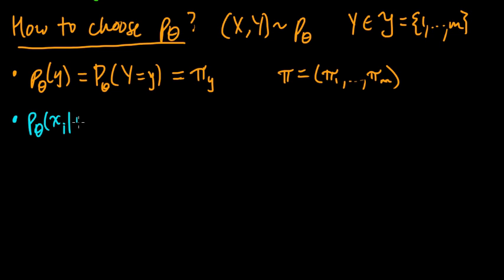And that determines the y part, and now we need to think about the conditional distributions of the x's. And remember, we only need to define the conditional distribution on the i-th coordinate, given y.